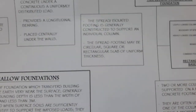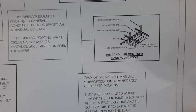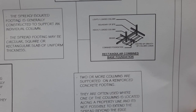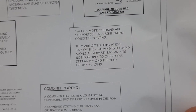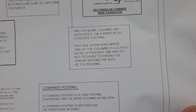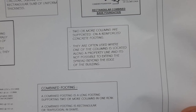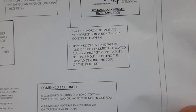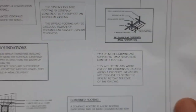Looking at the theory for combined footing: a lightly loaded column and a heavily loaded column — two or more columns are supported on a reinforced concrete footing. They are often used where one of the columns is located along a property line and it is not possible to extend the spread beyond the edge of the building.